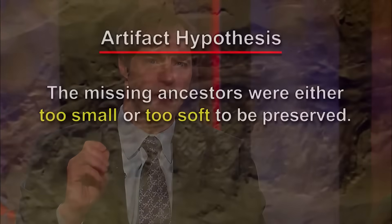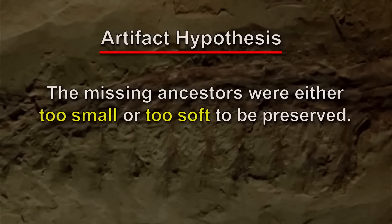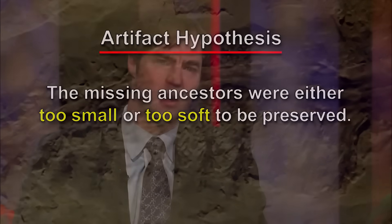150 years since the publication of The Origin of Species and given all these different fossil finds, no one really can say we haven't looked hard enough anymore. So what people are now saying is that the fossils are missing because of incomplete preservation — specifically, the idea that the missing ancestors weren't preserved because they were either too small or too soft to have been preserved. That's the version of the artifact hypothesis that's still in currency.